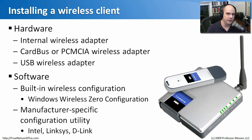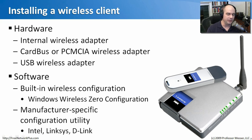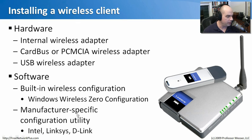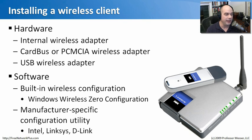If you've worked with an installation from a third party manufacturer, there are a couple of ways to do this. One capability is built into the operating system itself — Windows calls this the Windows Wireless Zero Configuration. It doesn't really care what manufacturer's wireless cards are used; it uses its own configuration system. However, some manufacturer cards have capabilities that go beyond Windows Wireless Zero Configuration, so you can use their specific drivers — Intel, Linksys, D-Link, Netgear all have their own manufacturer-specific configuration and setup programs.